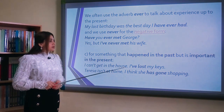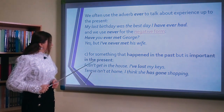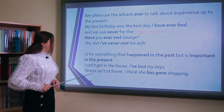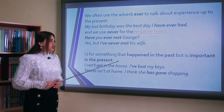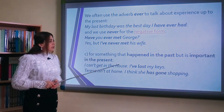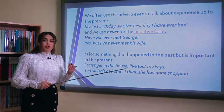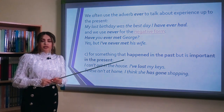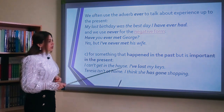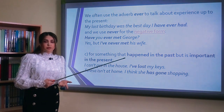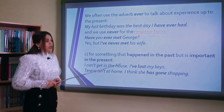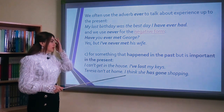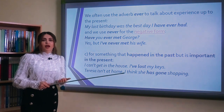We also use the present perfect for something that happened in the past but is important in the present. For example: I can't get in the house — I have lost my keys. Teresa isn't at home — I think she has gone shopping. İndiki bitmiş zamandan həmçinin keçmişdə baş verib, lakin hal-hazırkı dönəm üçün əhəmiyyətli olan hərəkətlər üçün istifadə edirik. Məsələn: mən evə daxil ola bilmirəm, açarlarımı itirmişəm. Teresa evdə deyil — mən düşünürəm ki, o alış-verişə gedib.